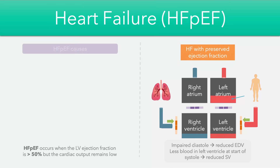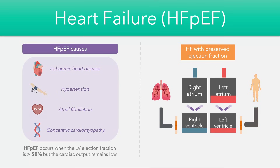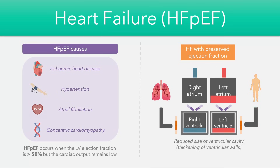There are a range of causes behind this: myocardial ischemia, hypertension, and arrhythmias such as atrial fibrillation where the ventricles are unable to fill properly due to an irregular heartbeat. Some patients may also have concentric cardiomyopathy — a structural change where the ventricles become smaller and less wide due to thicker ventricular walls. These structural changes lead to less space for blood to be held, resulting in reduced cardiac output because only a small volume of blood enters the ventricles during diastole.